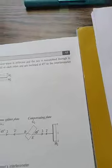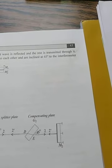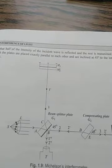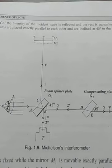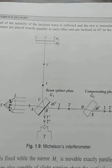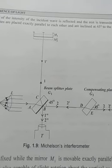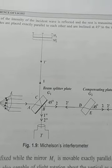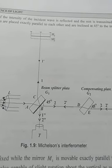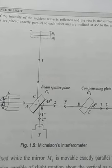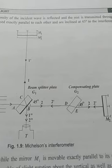The most common experiment for division of amplitude is the Michelson interferometer and Newton's ring experiment. In the Michelson interferometer, we have two mirrors of 100% reflectivity so that we can get light rays reflected back from the mirrors, and one semi-polished plate which gives us the reflected and refracted ray — that is, the amplitude is divided.